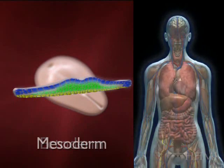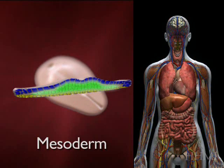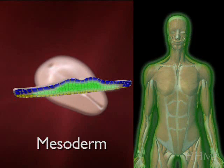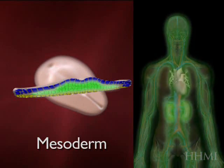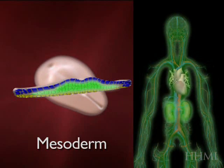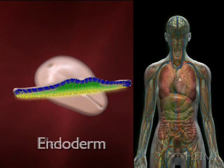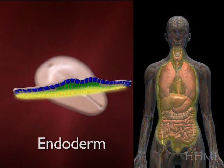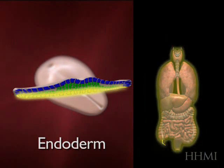The middle part, the mesoderm — shown in green here — gives rise to the muscle, including the kidneys and the heart. And the endoderm gives rise to the whole gut tube; there you see the lung, the liver, and the intestine.